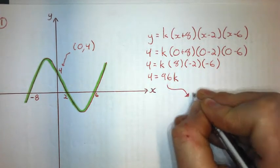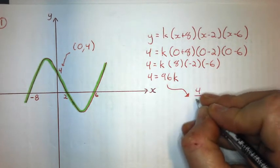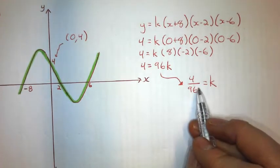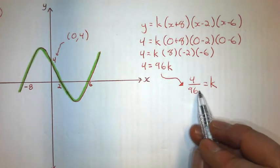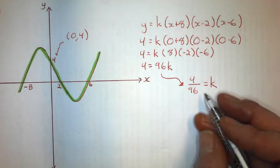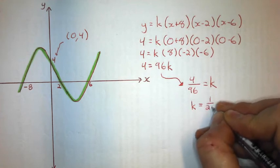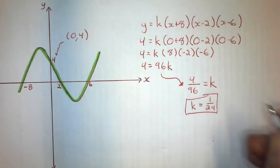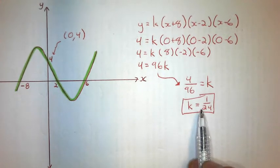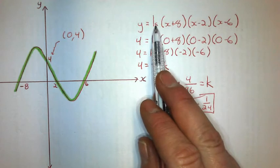Running out of space, but to solve for k I divide by that coefficient. Since I get a big decimal, I'll simplify to a fraction instead. I simplify that fraction and get 1/24. Once I have that constant, I substitute it back in and that's my equation.